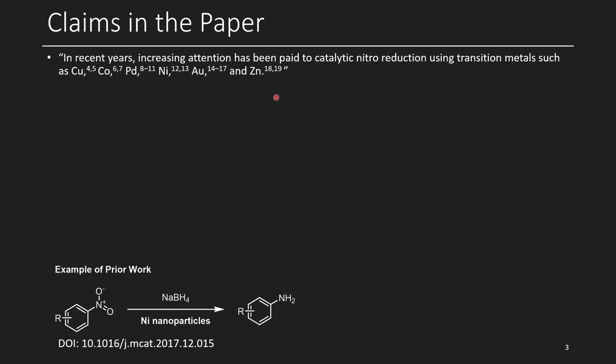The claims that this paper makes are as follows: In recent years, increasing attention has been paid to catalytic nitro reduction using transition metals such as Cu, Co, Pd, Ni, Au, and Zn.